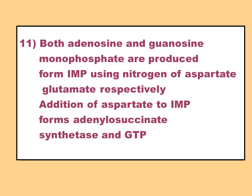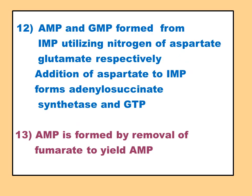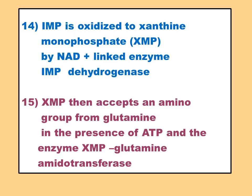Addition of aspartate to IMP forms adenylosuccinate in the presence of adenylosuccinate synthase, and adenosine monophosphate is formed with GTP required. AMP and GMP form from IMP utilizing the nitrogen of aspartate and glutamate respectively. Adenosine monophosphate is formed by the removal of fumarate. From IMP, guanosine monophosphate is formed by xanthosine monophosphate dehydrogenase with NAD as coenzyme, then by xanthosine monophosphate glutamine amidotransferase.